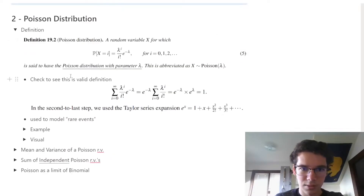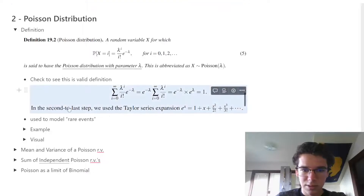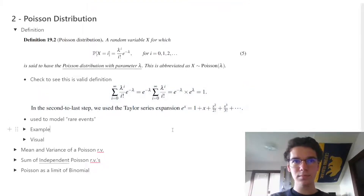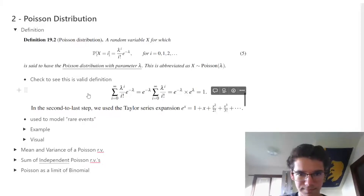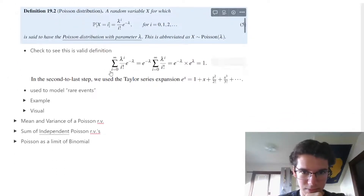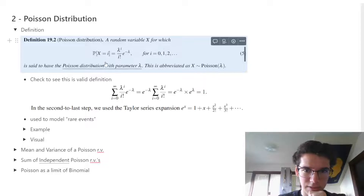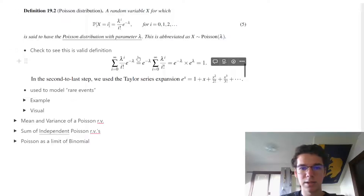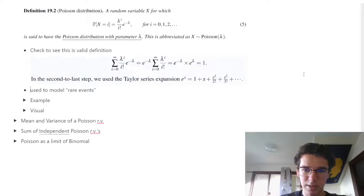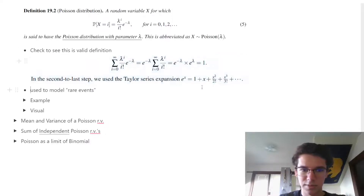Now we move on to the Poisson distribution. In general, it's used for modeling the occurrences of sparse events. A random variable x has Poisson distribution with parameter lambda if P(X = i) = e^(-lambda) * lambda^i / i!. We abbreviate this as Poisson(lambda). To check that all probabilities sum to 1, the second-to-last step converts the sum to e^lambda, which is useful for later proofs.